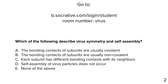Clicker question: which of the following describes virus symmetry and self-assembly? A) bonding contacts of subunits are usually covalent; B) bonding contacts are usually non-covalent; C) each subunit has different bonding contacts with its neighbors; D) self-assembly of virus particles does not occur; E) none of the above. Most of you got B — bonding contacts are usually non-covalent. Covalent is wrong; identical bonding contacts are the whole point of symmetry; and self-assembly does occur, as shown by the VLP vaccine examples.